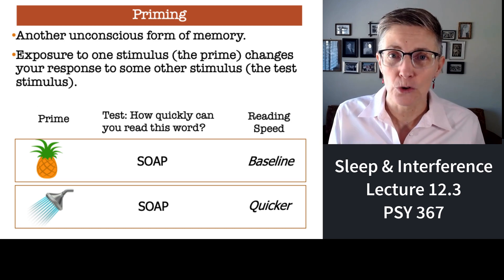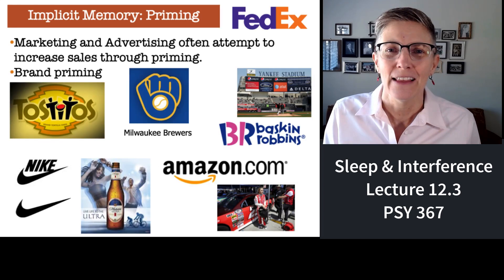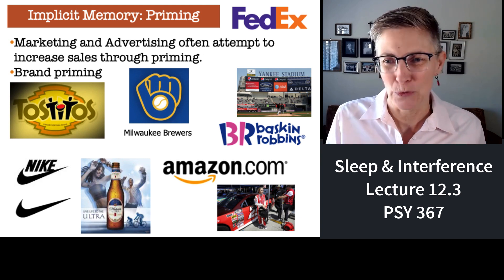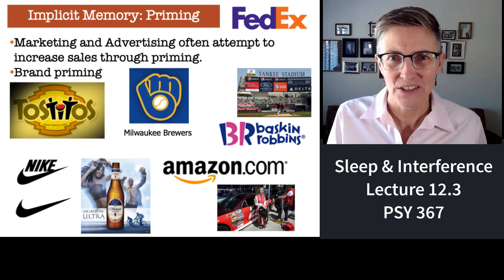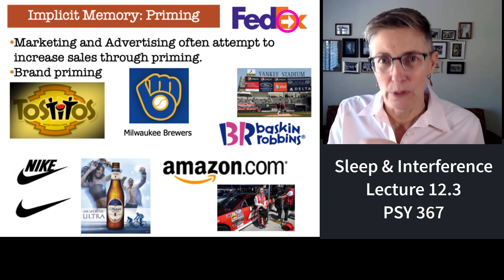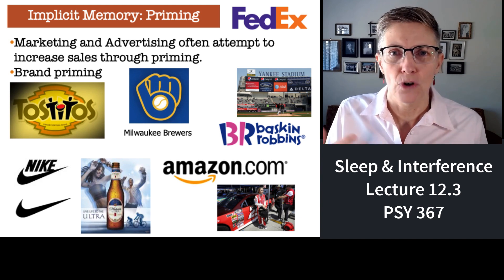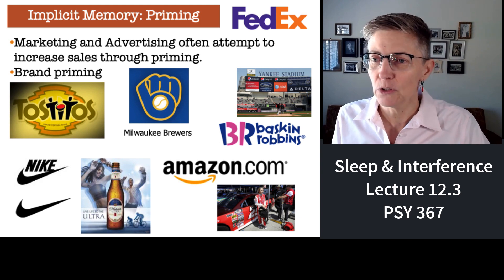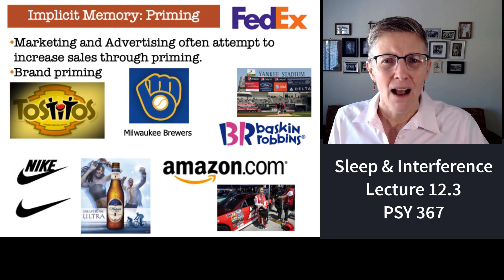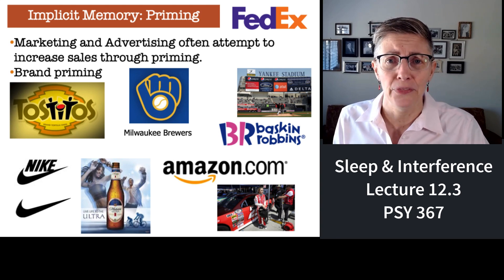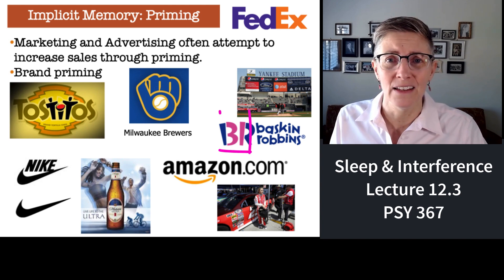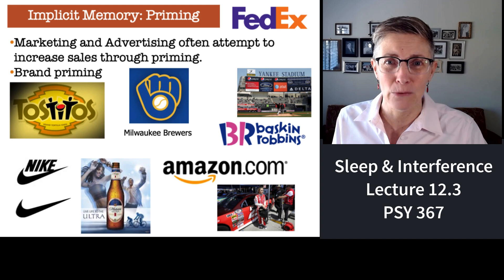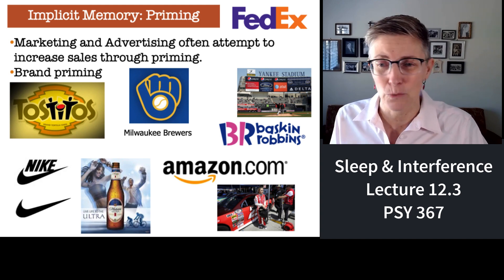Priming works great, and large corporations take advantage of it to sell you things. FedEx has a big white arrow hidden in the name to imply movement — most people aren't consciously aware of it but are probably still influenced. Baskin Robbins: I haven't been there in 30 years, but I know they have 31 flavors — because it's right in the name. Look at the pink letters or line segments in the Baskin Robbins logo and they spell the number 31. That's why we remember.